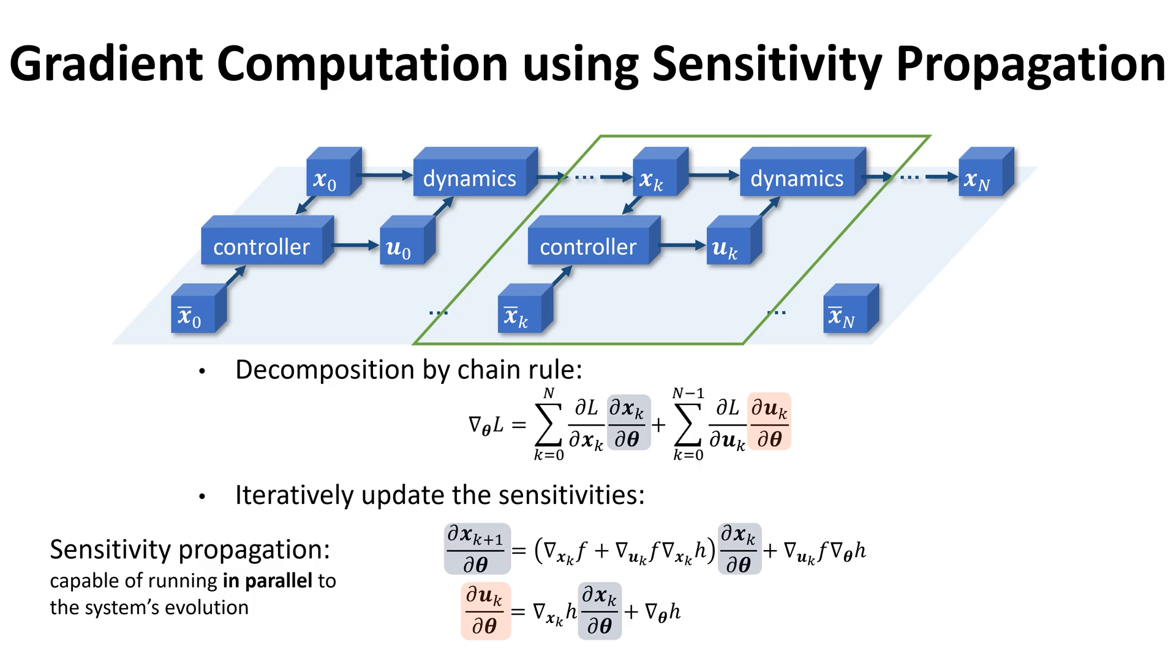To obtain the target gradient, we use sensitivity propagation. We first observe that the target gradient can be decomposed by the chain rule, where it breaks down to the sensitivities of the state and control to parameter θ.